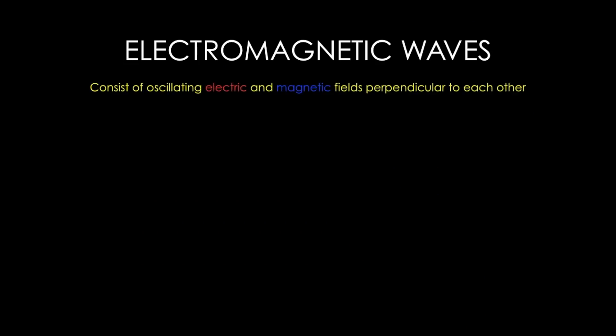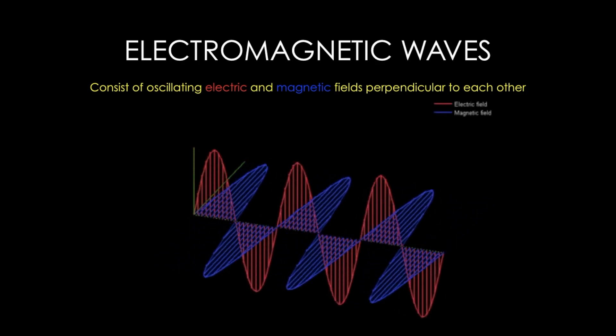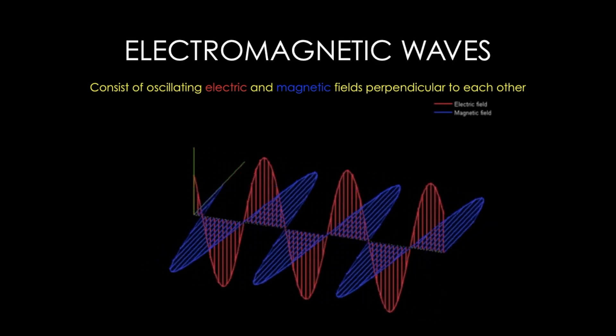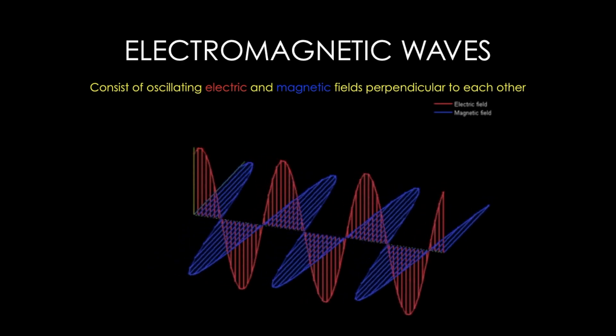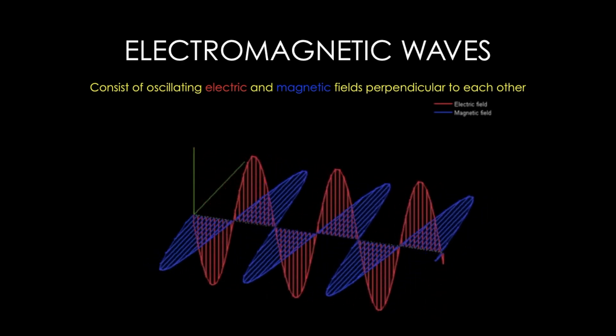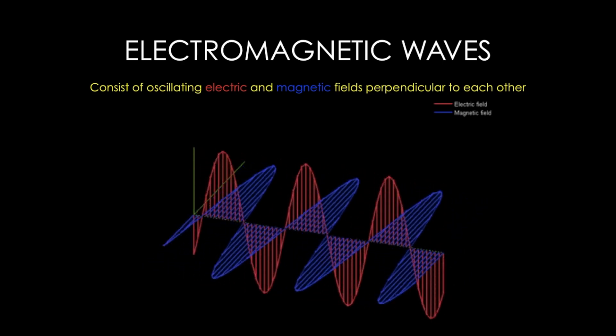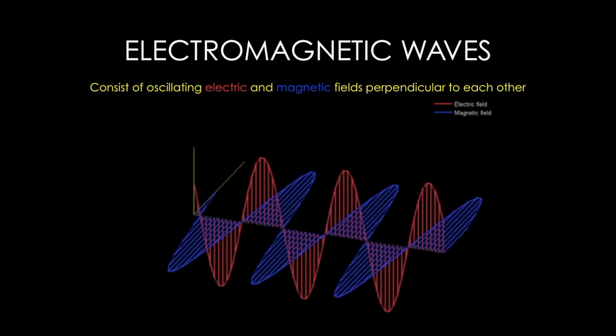Electromagnetic waves are those waves that consist of oscillating electric and magnetic fields perpendicular to each other. Unlike mechanical waves, which have particles oscillating back and forth, electromagnetic waves have oscillating electric and magnetic fields perpendicular to each other. Here we have the electric field oscillating in a vertical plane and the magnetic field oscillating in a horizontal plane — both perpendicular to each other. Needless to say, electromagnetic waves are transverse waves.